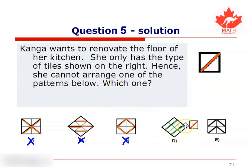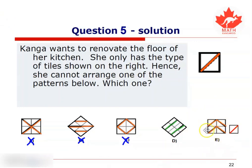So therefore this is the pattern that cannot be obtained by Kanga, and it's the answer that we're looking for. Just for argument's sake, let's take a look at the fifth pattern. The first section has a line going from one corner to the opposite corner, which fits the tile that Kanga has, and so does the second, third, and fourth section. So this pattern is obtainable by Kanga using the tiles that she has. Through a process of elimination, we notice that it's the fourth pattern that is not obtainable by Kanga, and it is therefore the answer that we are looking for.